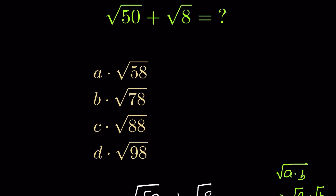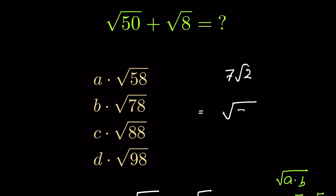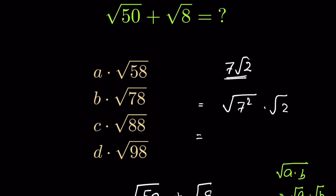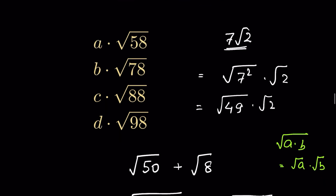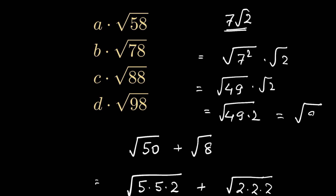However, 7 times square root of 2 does not appear directly among the options. But 7 times square root of 2 can be written as square root of 7² times square root of 2, because removing the square root with the square gives back 7. So we write it as square root of 7² times 2, which is square root of 49 times 2. Using the property square root of a times square root of b equals square root of (a times b), this becomes square root of 98.